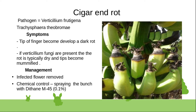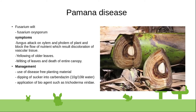Panama disease is caused by the fungus Fusarium oxysporum, which attacks the xylem and phloem of the plant. The fungus causes discoloration of vascular tissue.